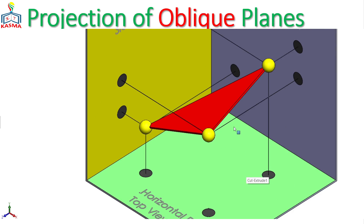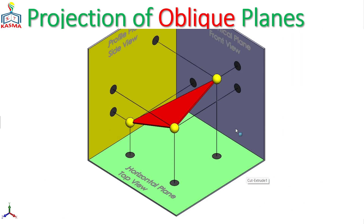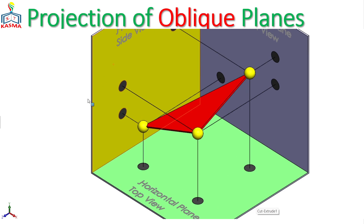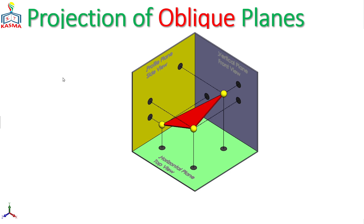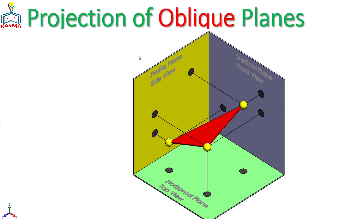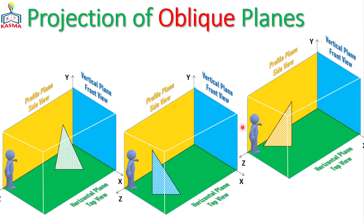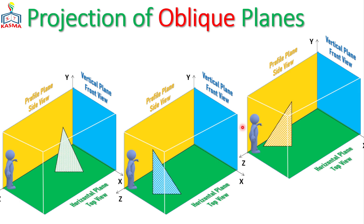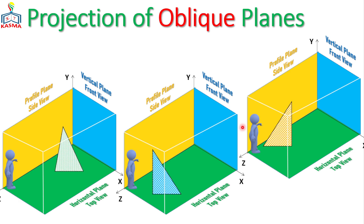Oblique planes are different from normal and inclined planes because they will have a foreshortened plane projection on all three principal planes — meaning the length is diminished. If you want to know more about other types of plane projections, you can find them on this channel via the video description.